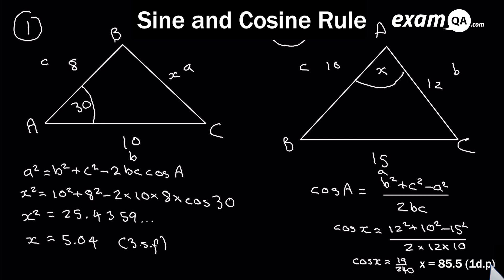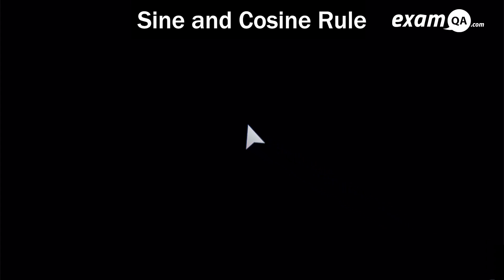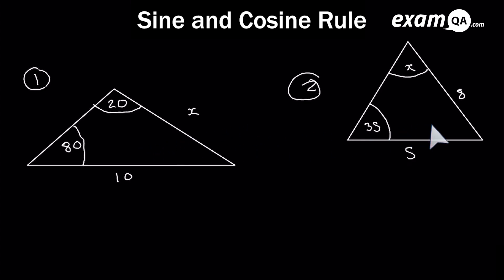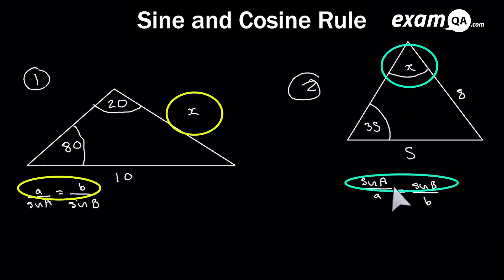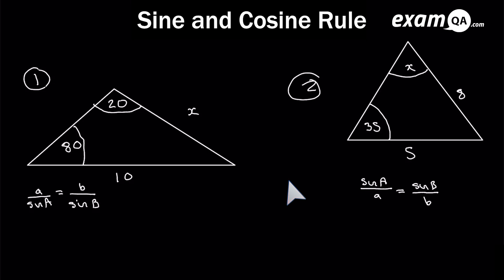Those are the only two scenarios for the cosine rule. Now let's look at the sine rule, which also has two scenarios. In one case you use the formula with the sides on top; when working out angles, you use the upside-down version with the angles on top. To spot when you can use the sine rule, you always need a full section — meaning an angle and its corresponding side both known.